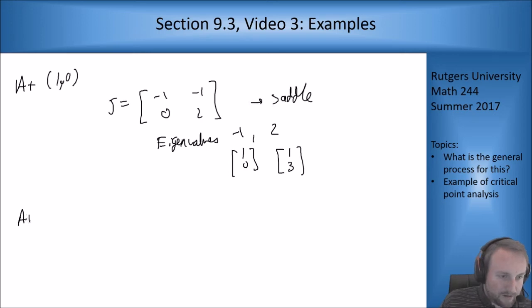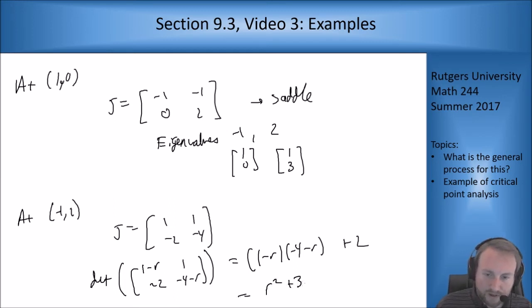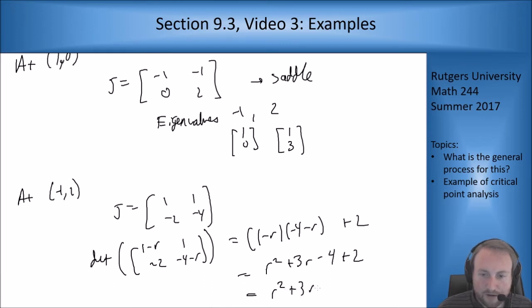At (-1, 2), the matrix becomes [1, 1; -2, -4], which is not obvious, so let's find eigenvalues. The determinant of [1-r, 1; -2, -4-r] equals (1-r)(-4-r) plus 2, which gives r squared plus 3r minus 2.